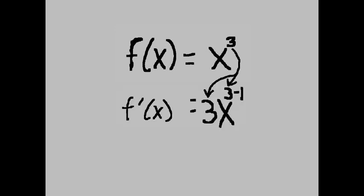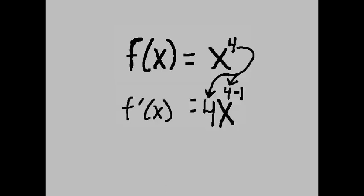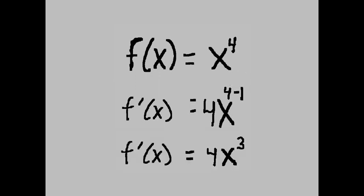f of x equals x cubed, f prime of x equals 3 times x to the 3 minus 1 power, which equals 3x squared. f of x equals x to the 4th, f prime of x equals 4x to the 4 minus 1 power, which equals 4x to the 3rd power.